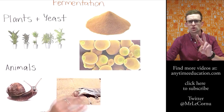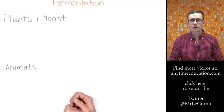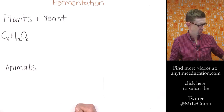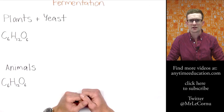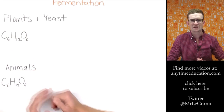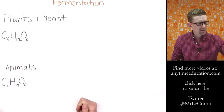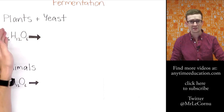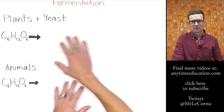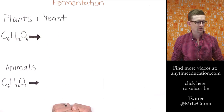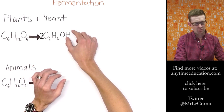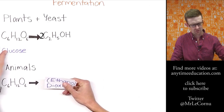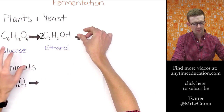Let's take a look at the summary equations for how they work. For both plants/yeast and animals, we start with glucose as the reactant - it's a high energy organic molecule that we're breaking down to release energy. We're breaking it down without any oxygen, so there's no other reactant. In plants and yeast, we break down glucose to produce ethanol - C₂H₅OH.